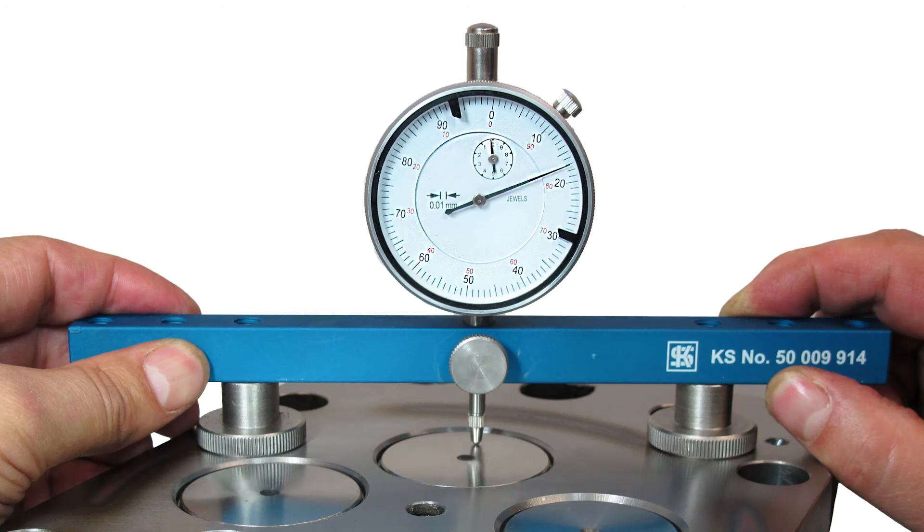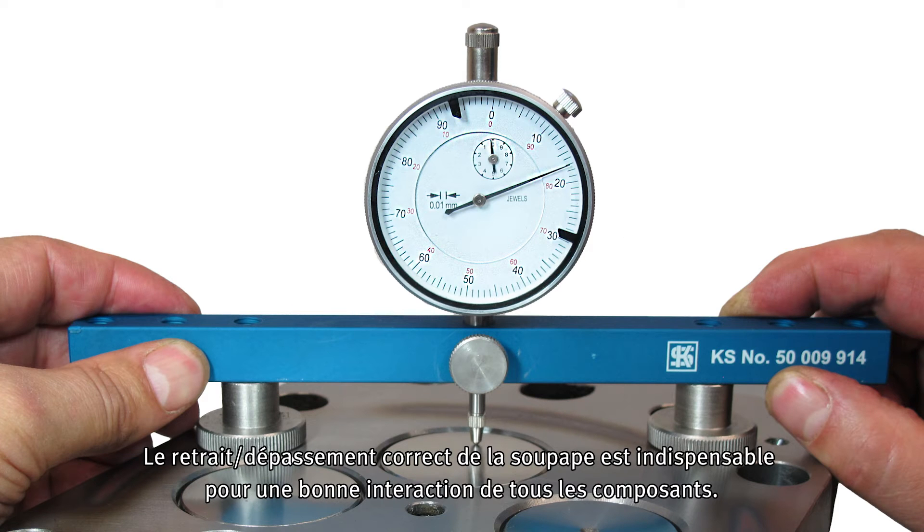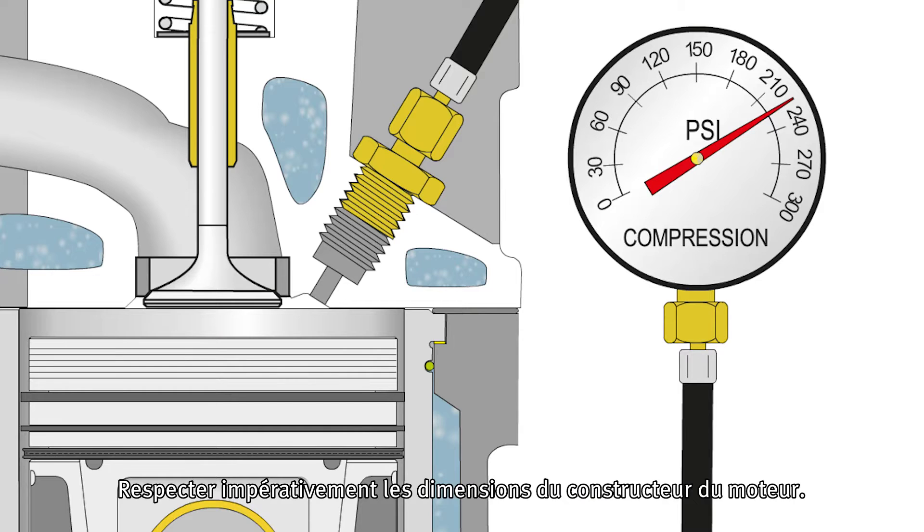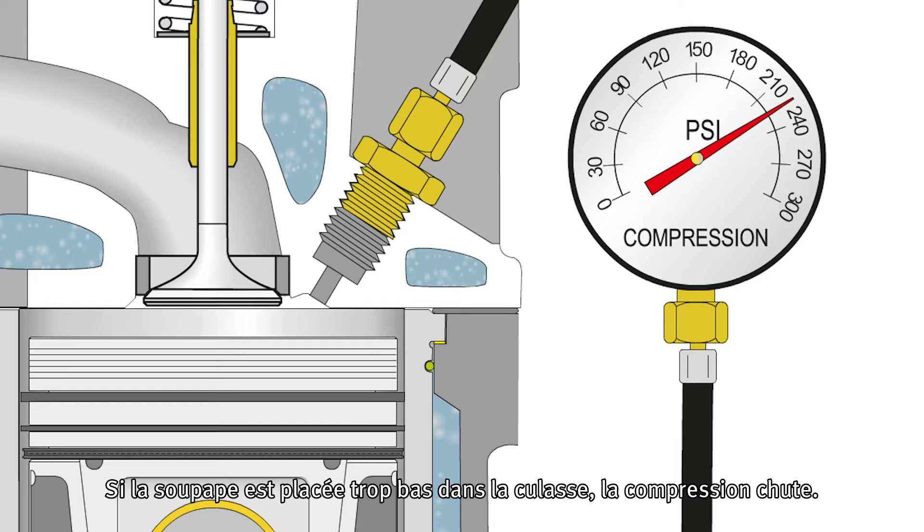The correct valve recess or valve protrusion is a prerequisite for smooth interaction of all components. Thus, the dimension specifications of the engine manufacturer must be adhered to. If valves are positioned too deep in the cylinder head, this results in diminished compression.